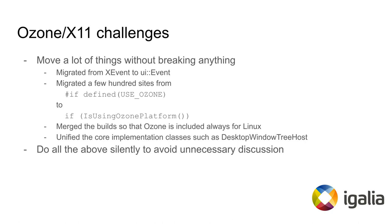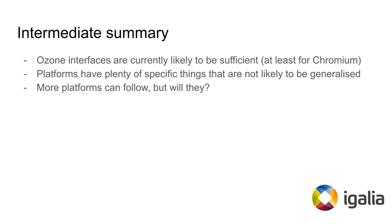Half a year ago, in autumn 2020, we made a tiny change in the GN files that enabled Ozone in desktop builds of Chromium for Linux. That happened almost unnoticed, as we planned. To summarize: at this moment, Ozone is likely sufficient for what Chromium needs and is proven to work, because two quite distinct implementations have fit into it.